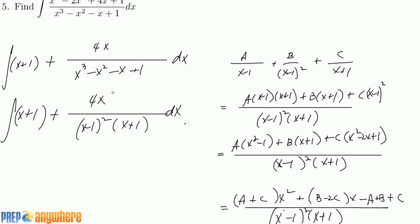Okay, so if you compare that with the 4x, A plus C has to equal to 0, which means A is equal to negative C, and B minus 2C has to equal to 4, and minus A plus B plus C also has to equal to 0. So if A is equal to negative C, I can replace the minus A here with C to get B is equal to negative 2C. So then I can replace that with negative 2C. So negative 4C is equal to 4, so C is equal to negative 1.